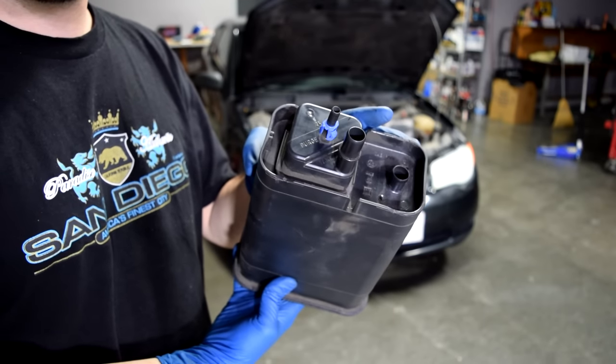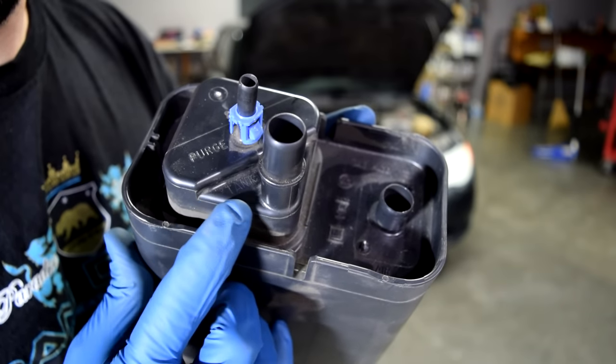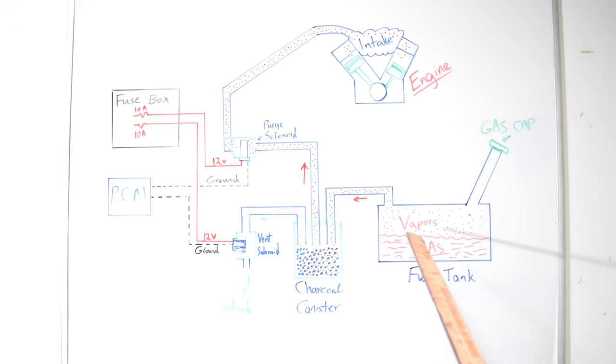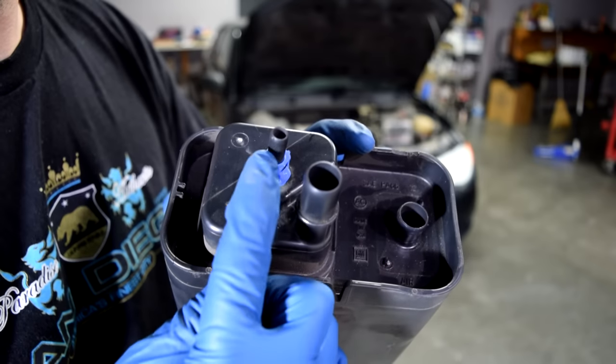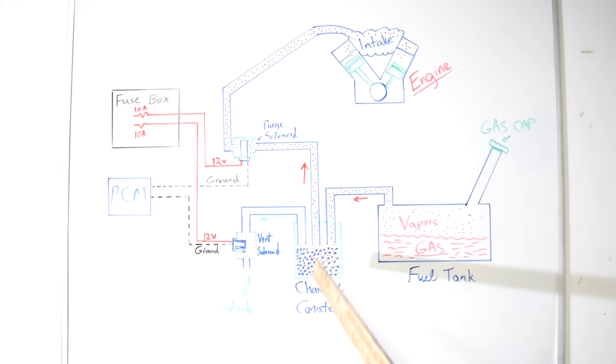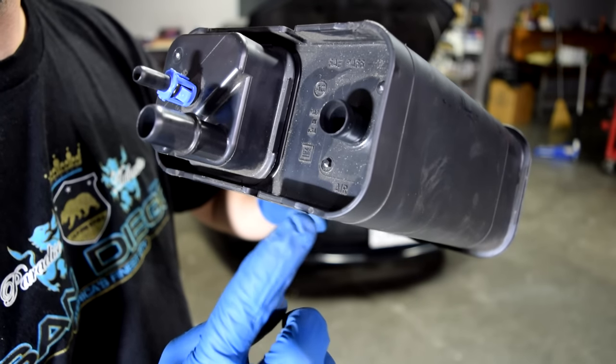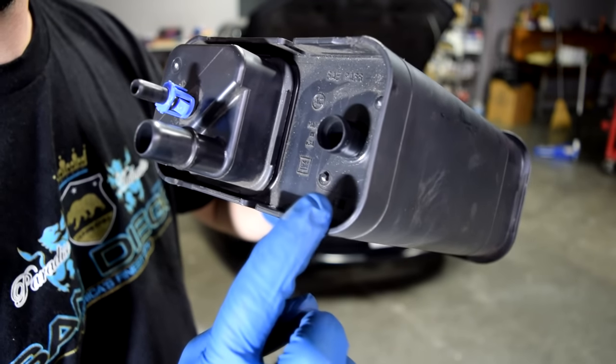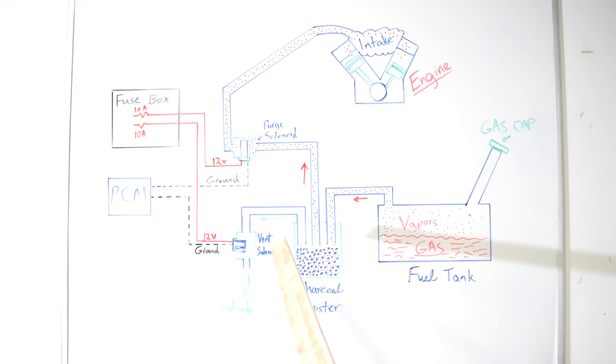So here's a look at our charcoal canister. Right here where it says tank is where this line that comes from your fuel tank, which carries fuel vapors and hydrocarbons into your charcoal canister, attaches to. And this one where it says purge is where the line from your charcoal canister to your purge solenoid, which carries the stored hydrocarbons from your charcoal canister, attaches to. And as mentioned in my previous video, this one where it says air next to it is where the line that goes to your vent solenoid attaches to on your charcoal canister.